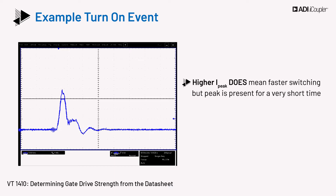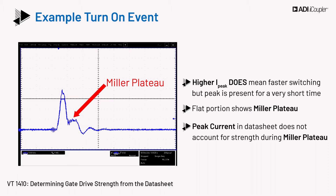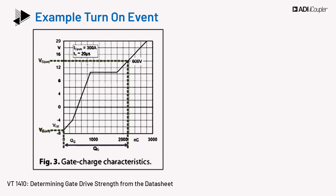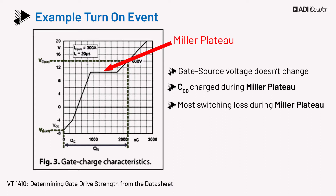Higher I-peak does mean faster switching, but the peak is present for a very short time. The flat portion of the graph shows the Miller plateau, which is the time when high current is most needed, but the peak current number in data sheets doesn't account for it during this time. The gate charge characteristics emphasize this — the gate voltage doesn't change and the gate-to-drain capacitor CGD is charged during the Miller plateau. This interval is when most of the switching loss occurs, and the driver should be able to transition the MOSFET gate quickly out of the Miller plateau region.